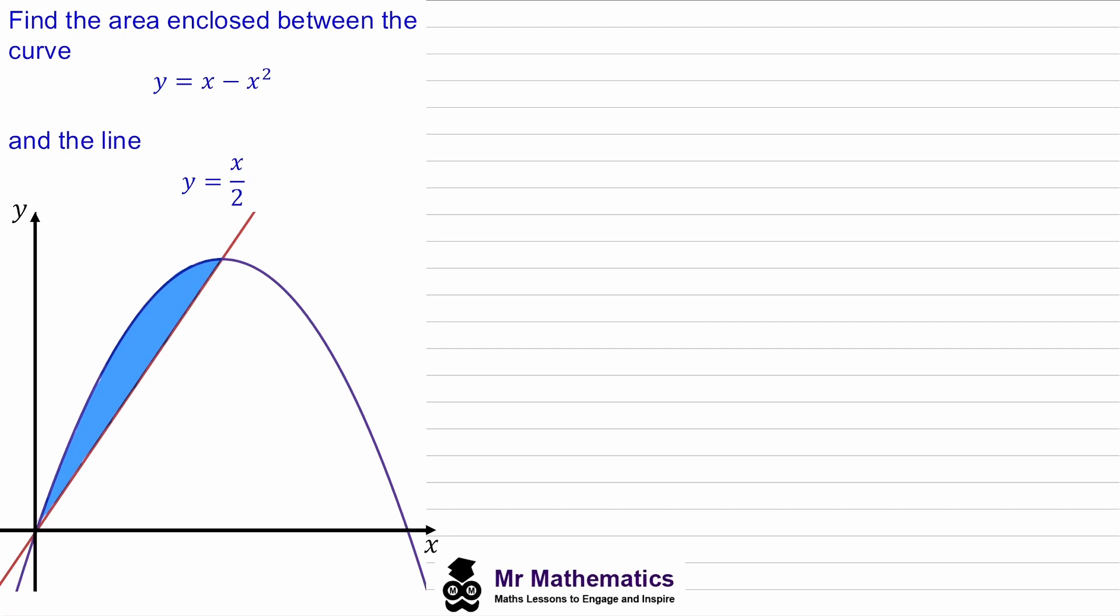In this example we've been asked to find the area of this blue shaded region. We've been told that the curve is y equals x minus x squared and that the straight line is y equals x over 2.